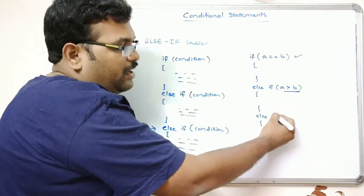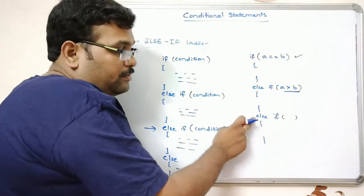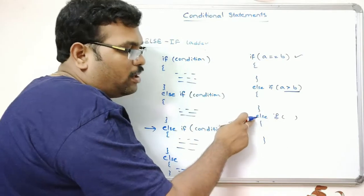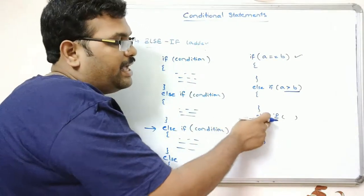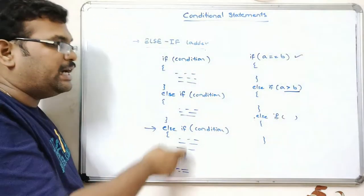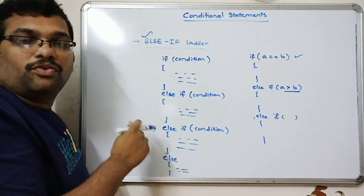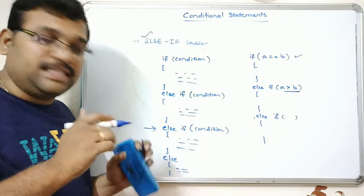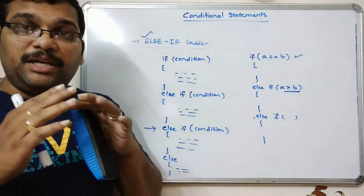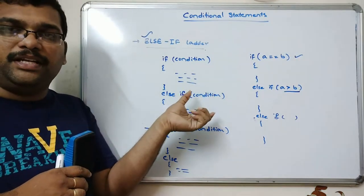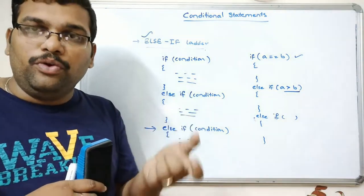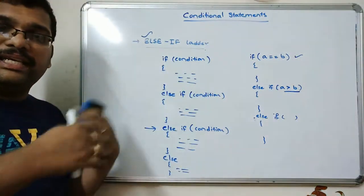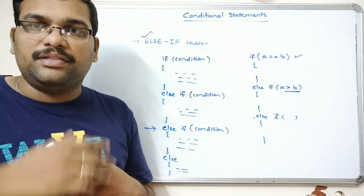If you want to check one more condition you write else-if again with the condition. In the else part we should not write a condition directly; if you want to add a condition there, include if beside the else to make it else-if. The else-if ladder is used for checking multiple conditions. We have seen three conditional statements: simple if, if-else, and else-if ladder. The result of a condition is a boolean — either true or false. Now we will see all these by executing a small program in the compiler.